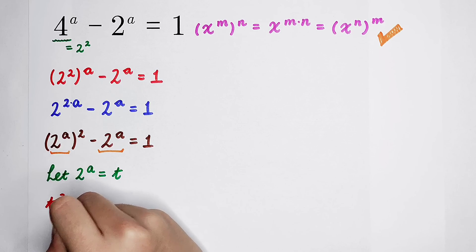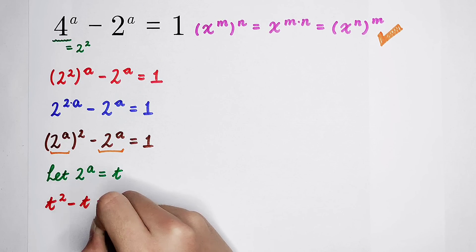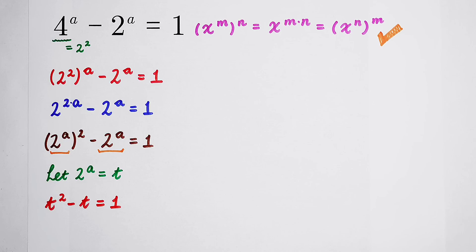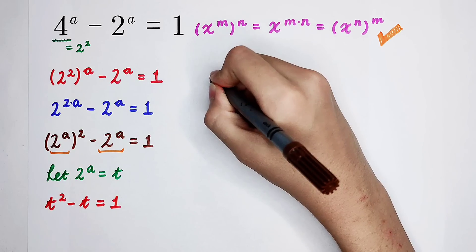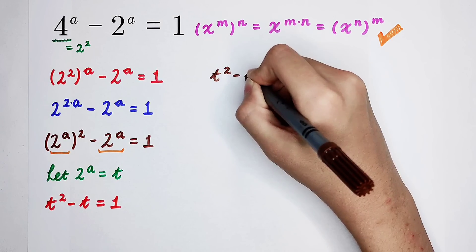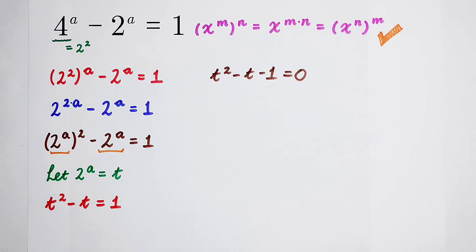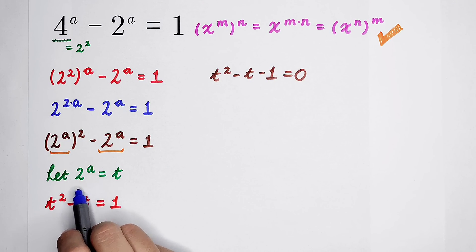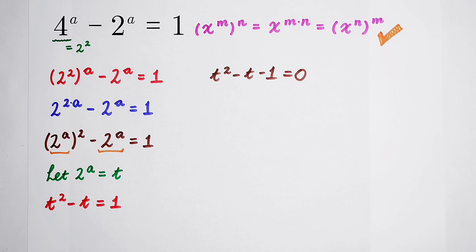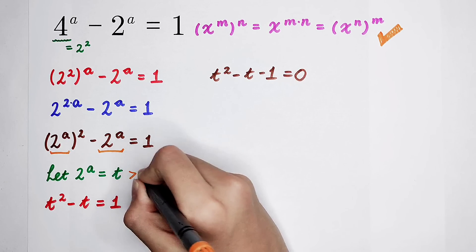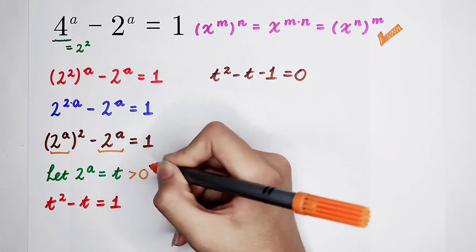The equation becomes t squared minus t is equal to 1. Subtract 1 from both sides: t squared minus t minus 1 equals 0. Since 2 to the power of a is always positive, t is always positive — it cannot be negative.